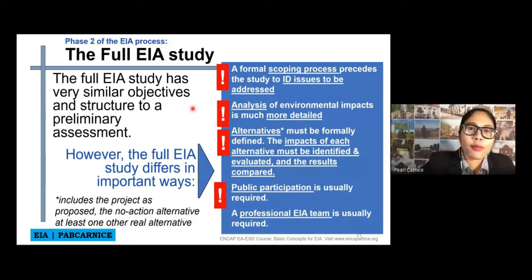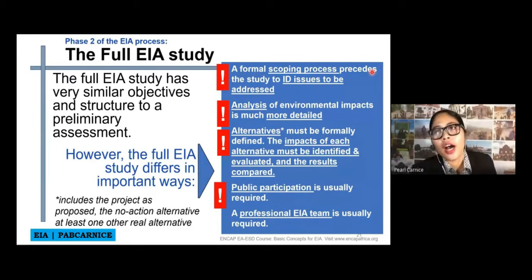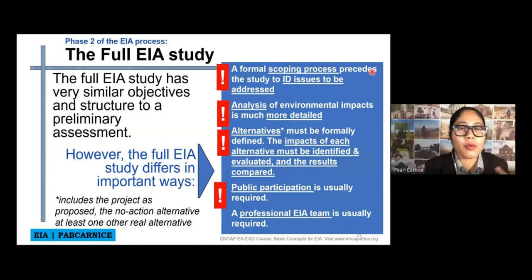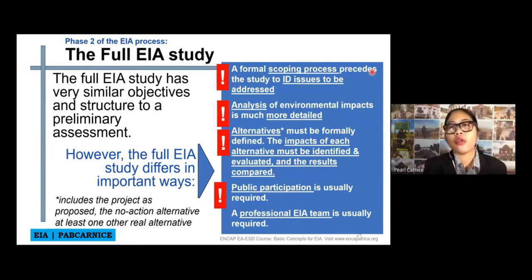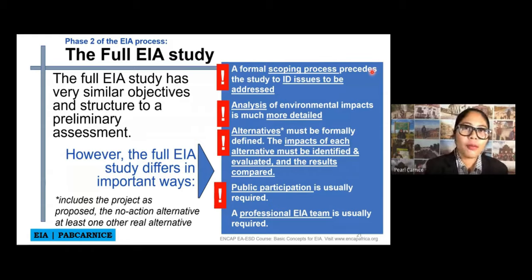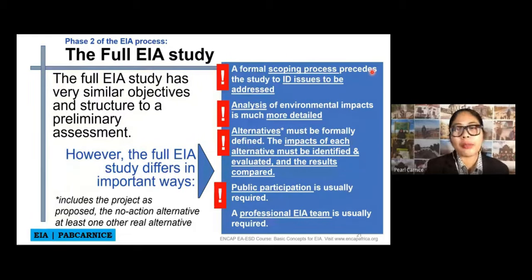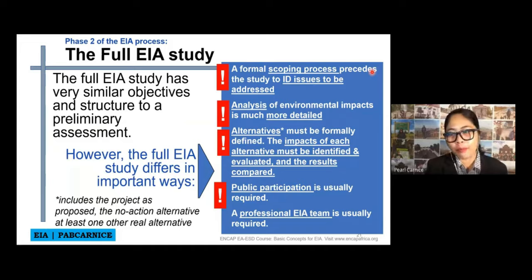First difference: a formal scoping process proceeds to study and identify issues to be addressed. Scoping is a public scoping in which we go to the area and hold a session where stakeholders attend and state their issues and what could be the possible impacts to them. From the scoping, we take note of all issues and concerns related to our project and possible impacts, and we include those in our EIA study, along with the accessibility of stakeholders directly involved in the proposed project or activity.